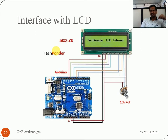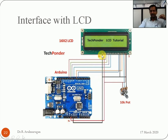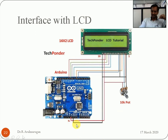For LCD interface: the LCD has 1 to 16 pins. You provide 5V power supply and ground, a variable potentiometer for contrast adjustment, and then connect six data lines to the digital connections of the Arduino board.